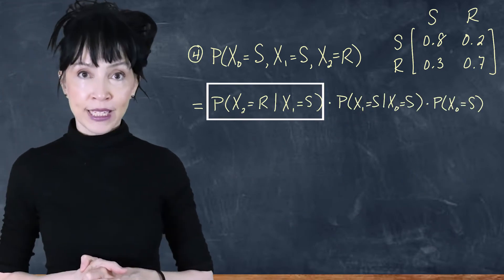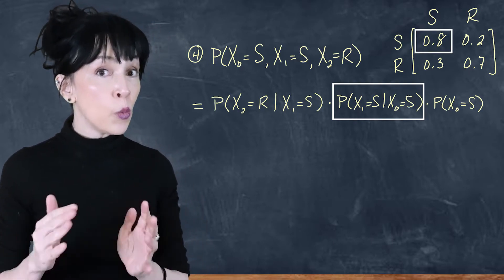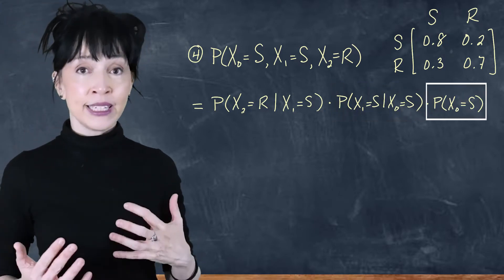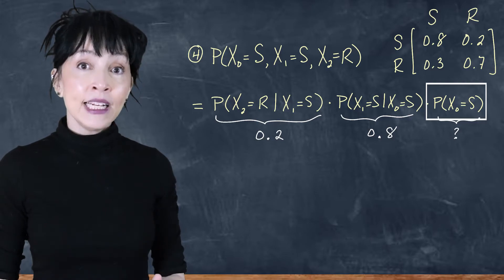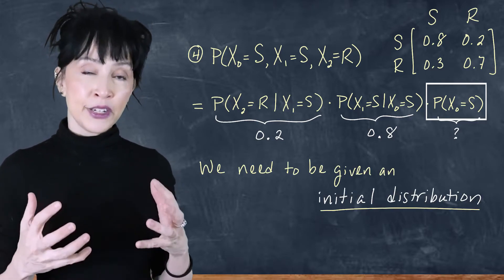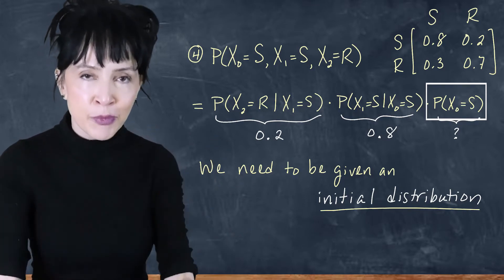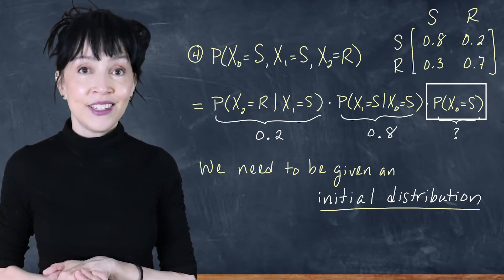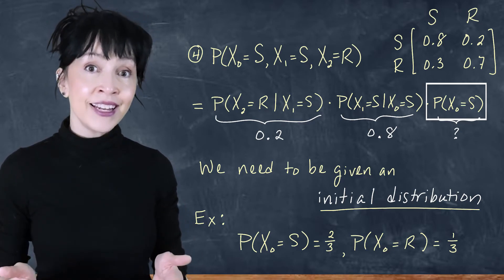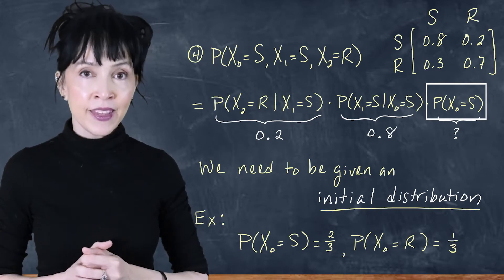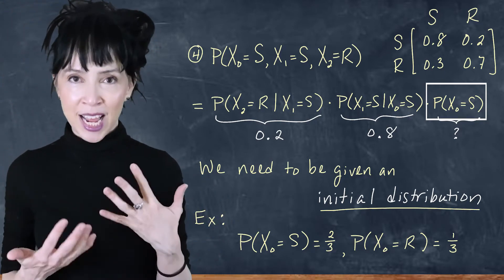This gives us the sunny-to-rainy transition in one time step, which we read off the matrix, times the sunny-to-sunny transition, also from the matrix. The probability that X_0 is sunny unfortunately can't be answered from the matrix alone — the matrix only gives transition probabilities. To answer this I need what is known as an initial distribution: a distribution someone gives us telling us whether day zero is sunny or rainy. Suppose the probability of it being sunny on day zero is two-thirds and rainy is one-third. So the answer is 0.2 times 0.8 times two-thirds.